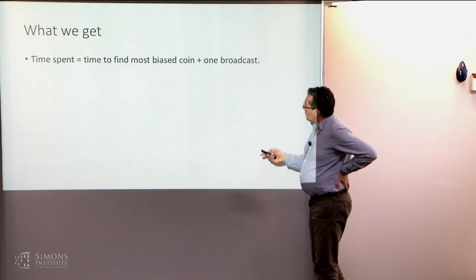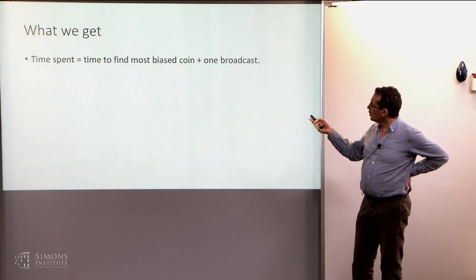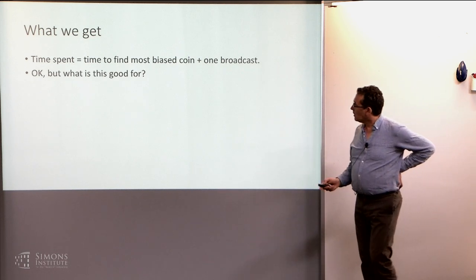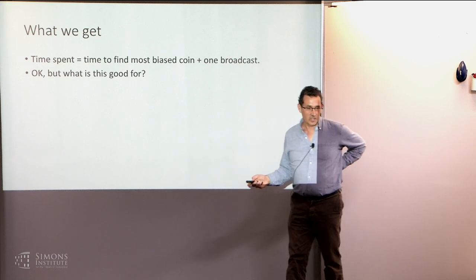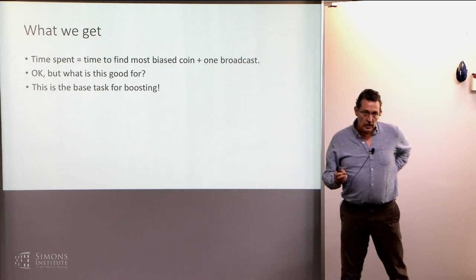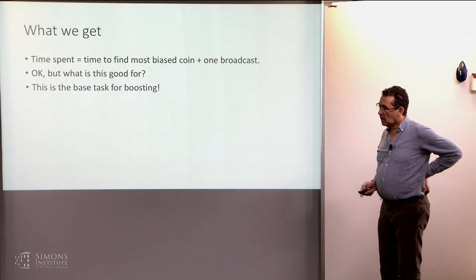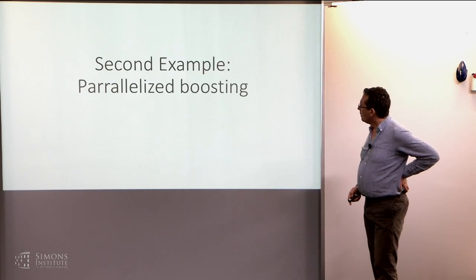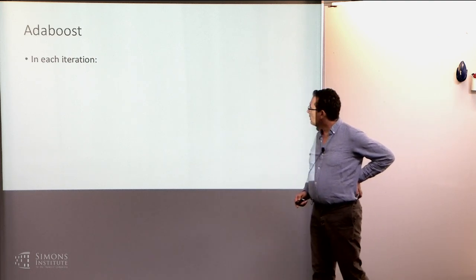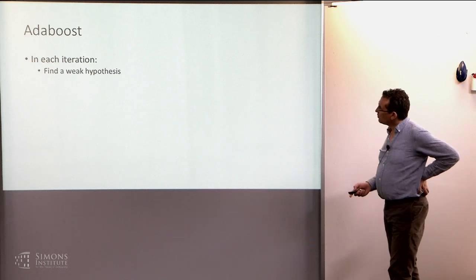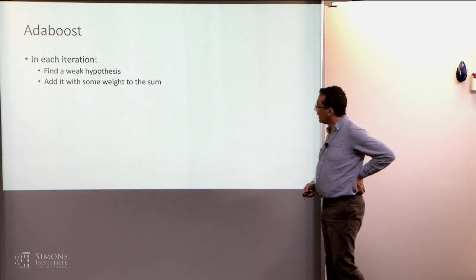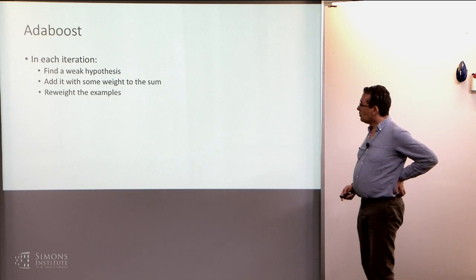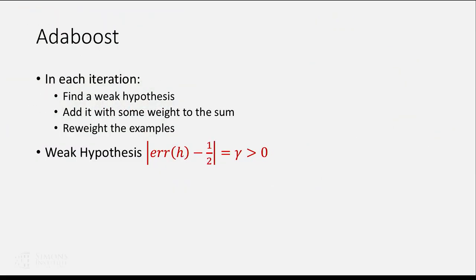So what do we get from this? The time spent is the time to find the most biased coin plus one broadcast. But this is good for what? So it's actually the basic step in boosting, right? So if you think about it, it's exactly what boosting does, and this is a way to do distributed asynchronous boosting. So let me talk about that. So AdaBoost. In each iteration, you have to find a weak hypothesis, and you add it with some weight to the sum. And then you re-weigh the examples. And the weak hypothesis is exactly this. The error of h minus a half is equal to gamma, which is larger than zero. So this is exactly a biased coin, right?